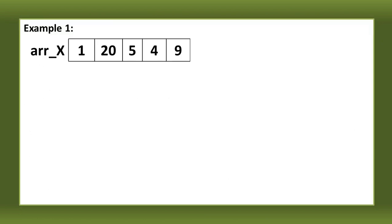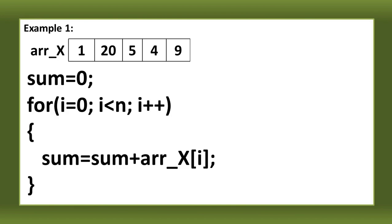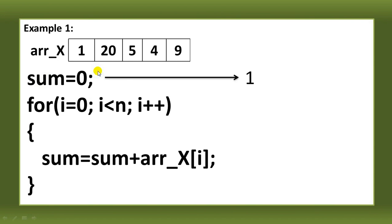Let's look at the first example. We have an array with five elements and an algorithm with: sum equals zero, a for loop, and inside the loop: sum equals sum plus ARR[i]. We'll compute all elements in the array. Breaking the algorithm into individual operations, each line of code is one operation. For 'sum = 0', the time complexity is 1 — because it only executes once.